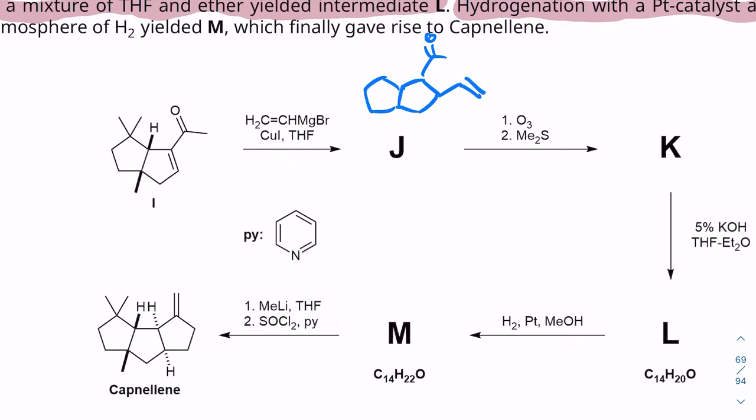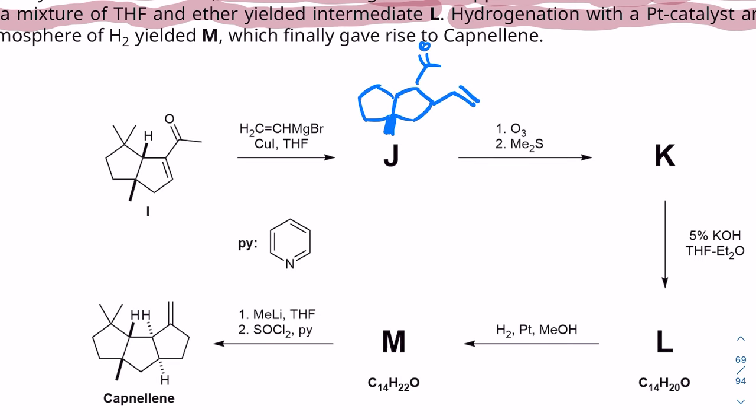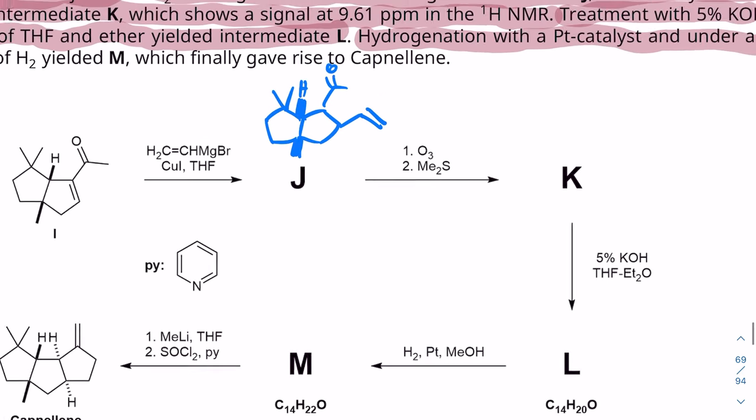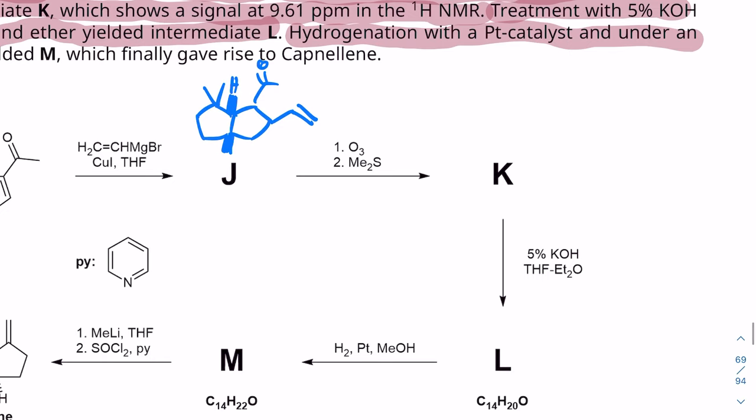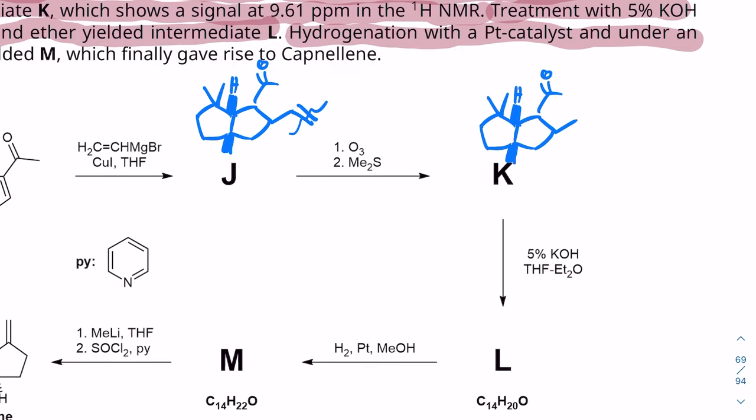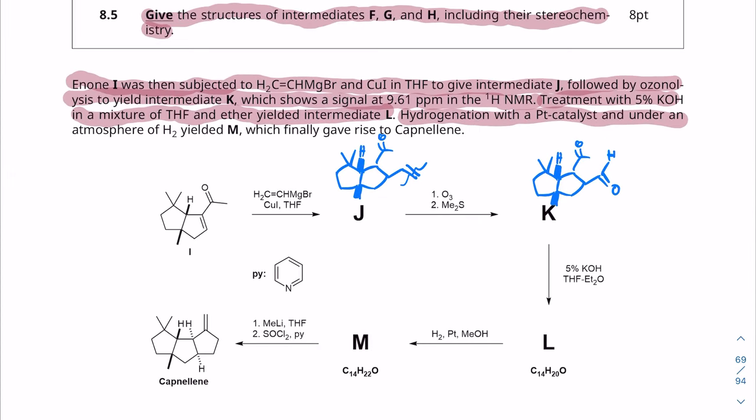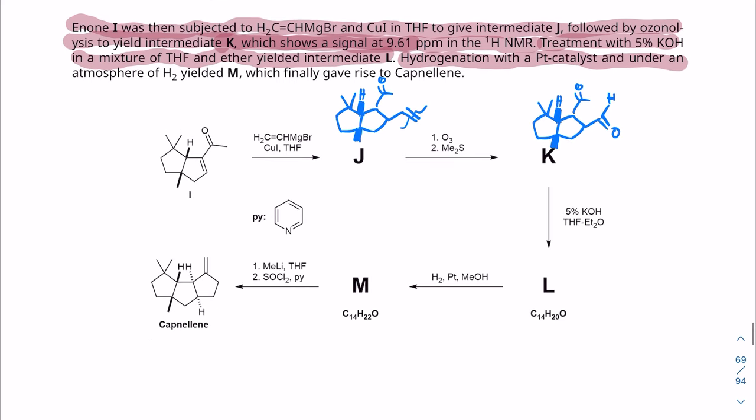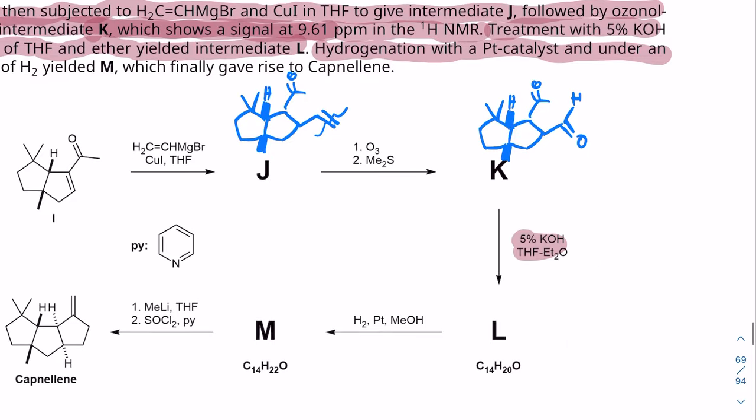Now ozonolysis cleaves carbon-carbon double bonds. There's only one, so we're going to cleave that guy. In fact, I'm just going to copy this over because it's way easier for me to draw, and it replaces the cuts with an oxygen. Now it says something about K. It said that it contains a signal at 9.61, which fits because these signals, the aldehyde hydrogens, show up somewhere around 9.6 to 9.8. Now we treat things with 5% potassium hydroxide in THF and diethyl ether.